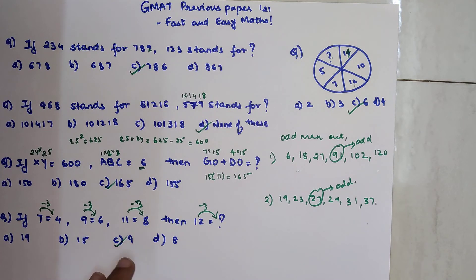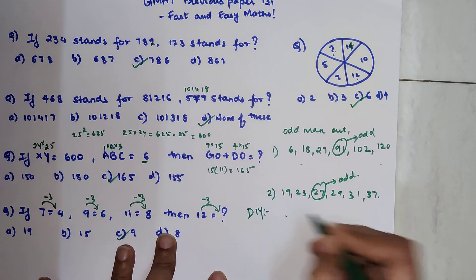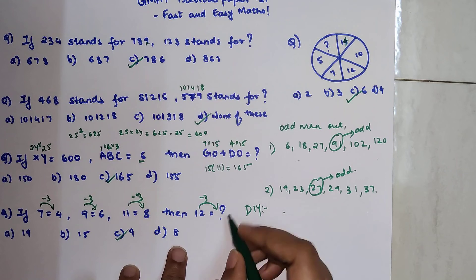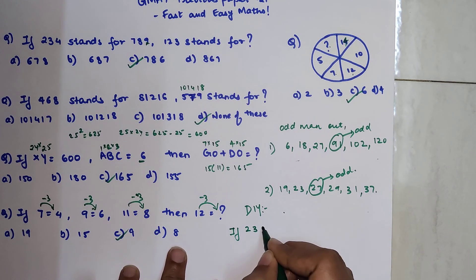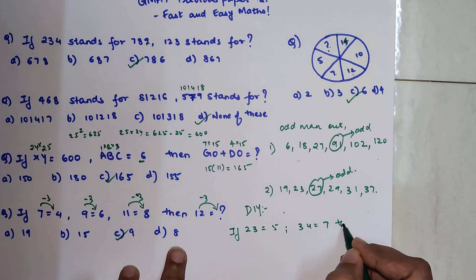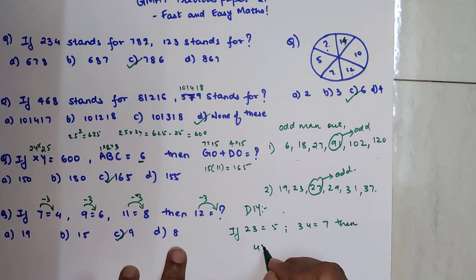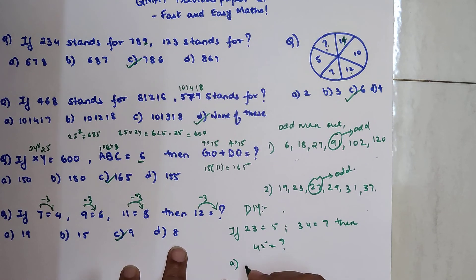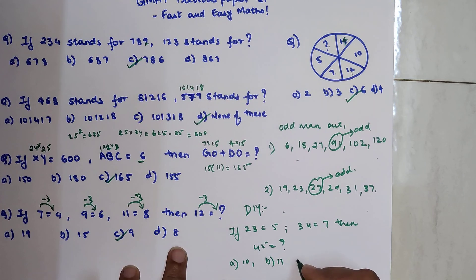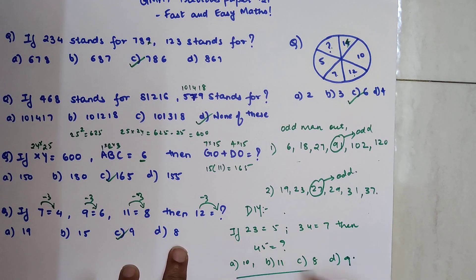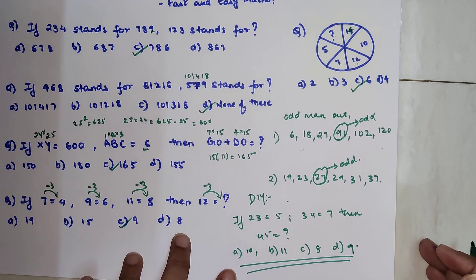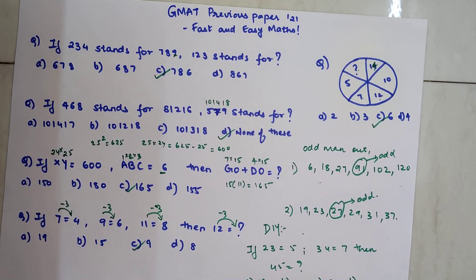So now my DIY for you is if 2, 3 is equal to 5 and 3, 4 is equal to 7 then 4, 5 is equal to what? Your options are 10, option B is 11, option C is 8, option D is 9. Do let me know your answers in the comment section. So that is it for today. I will definitely see you in the next video.